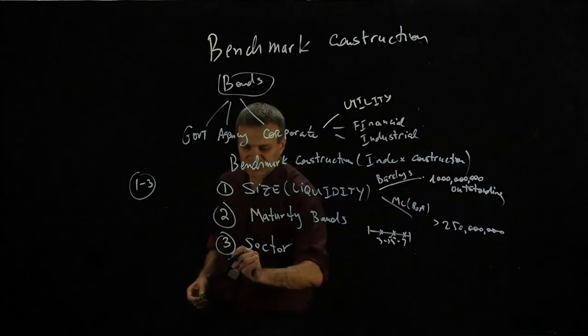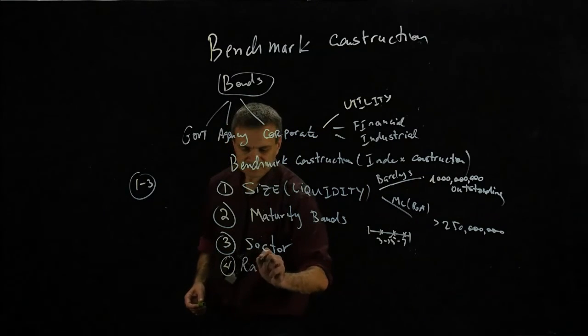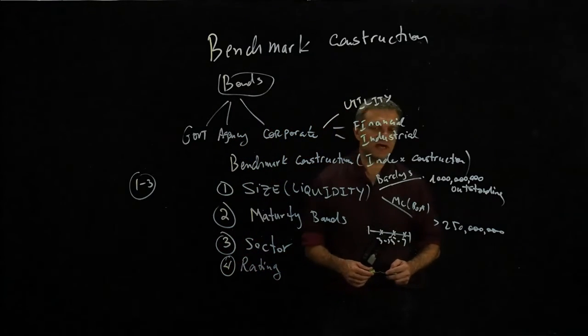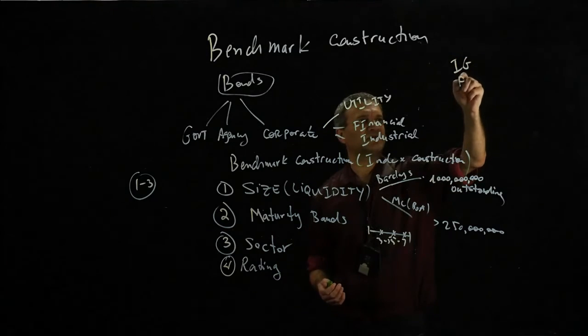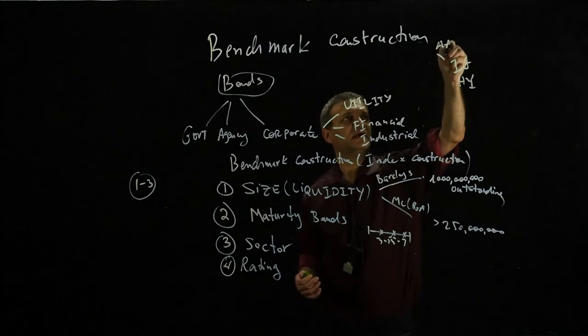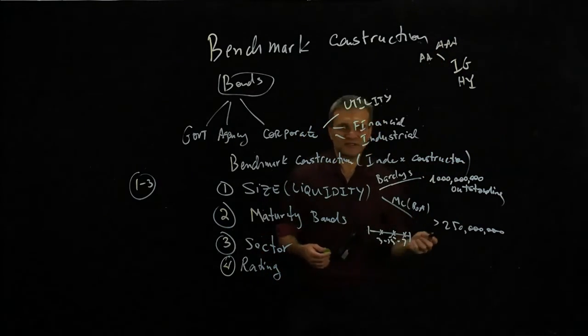And the fourth one and the last one is rating. And we said that the ratings are basically either, the crude up is either investment grade or high yield. And then you have the sub-rating: triple A, double A, all these grades. And high yield is the same.